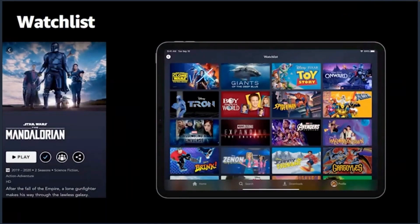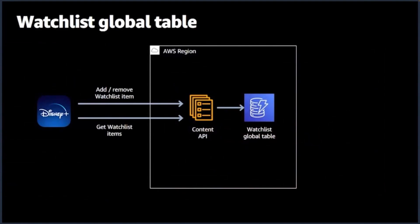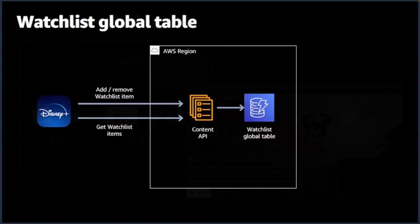The watchlist functionality — bookmarking something or adding something to a list you want to watch later — works on DynamoDB. Their architecture is much simpler because you're not doing this every few seconds. They go through the straight content API. They can add and remove an item from your watchlist, or make an API call for getting all of your watchlist items so the client can display them to you. That sits inside their watchlist global table.